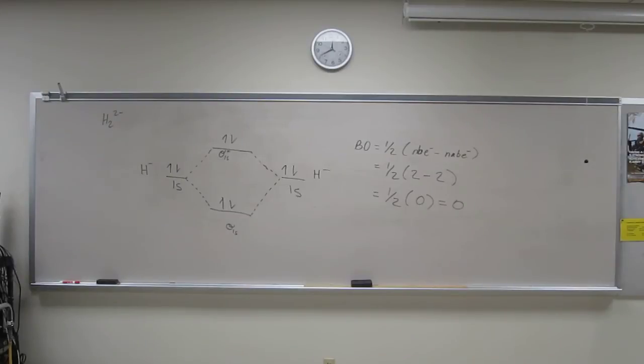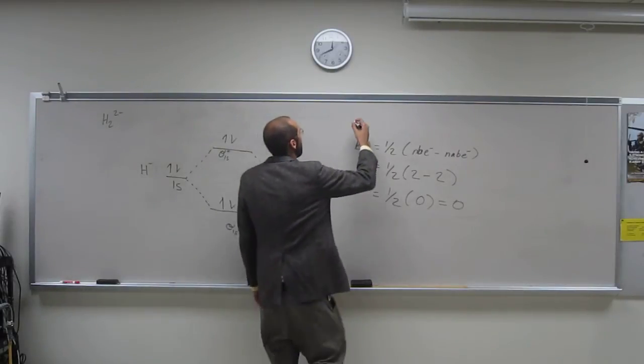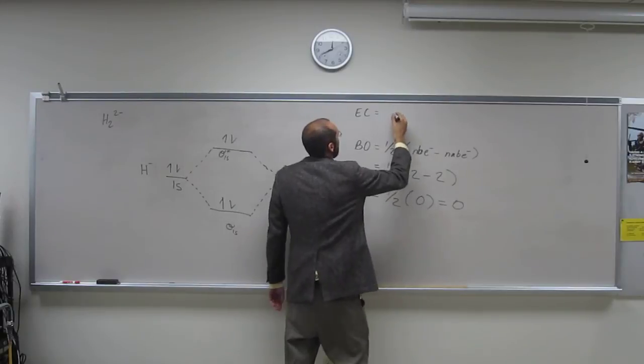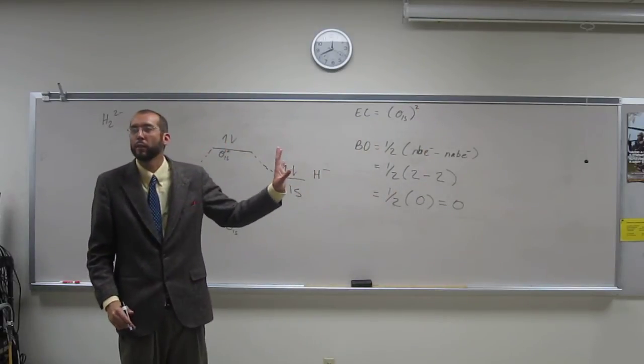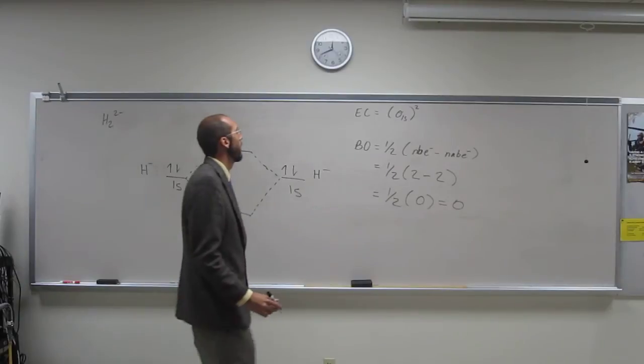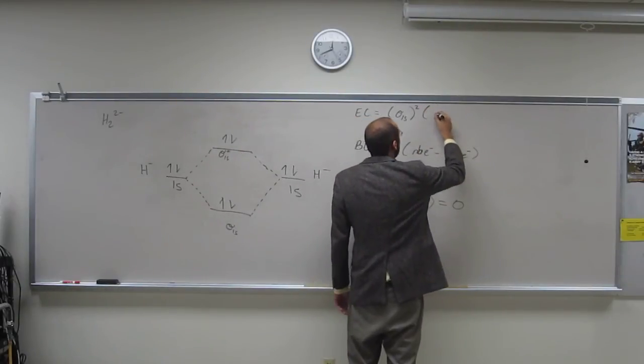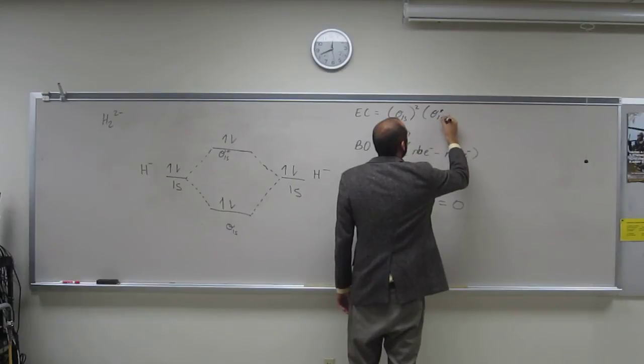So it also asks us to, well, if it exists, write the electron configuration. Let's write the electron configuration for this thing anyways, even though it doesn't exist. Okay, let's just pretend. So the electron configuration would be sigma 1s 2. So notice how you write this a little different from how you draw the atomic electron configuration.